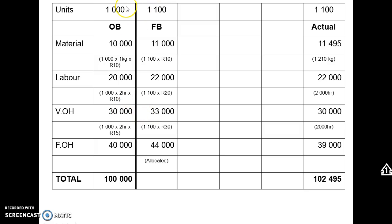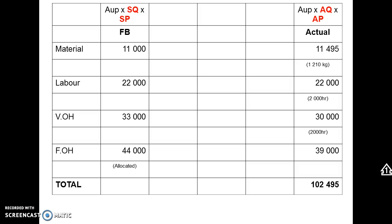For now, forget about flexing fixed overheads — fixed costs should not change if we produce more or less units than budgeted. We'll focus only on variable costs. The original budget has been eliminated since we can't compare 1000 units with 1100 units. Everything on this table is for the actual units produced of 1100 units — it's vitally important that you never compare costs for the original budgeted units with actual units if the quantities differ.